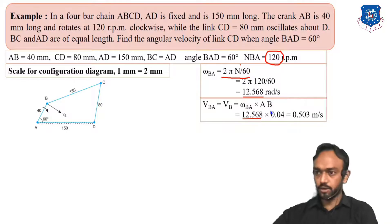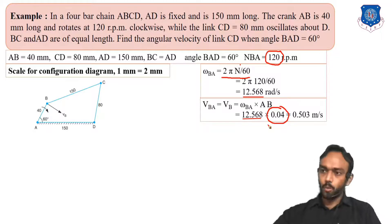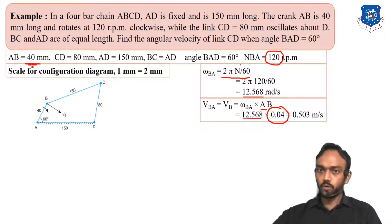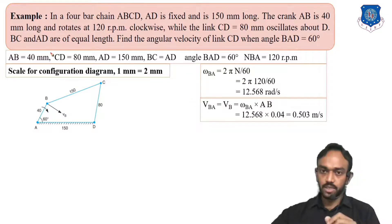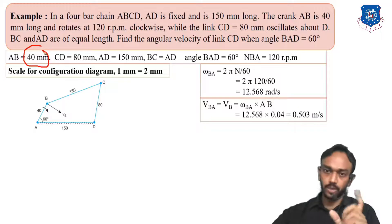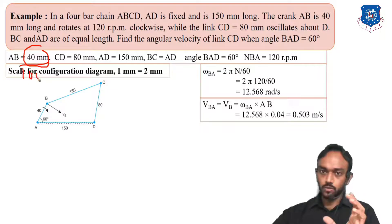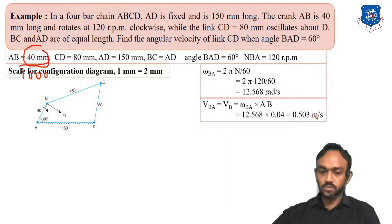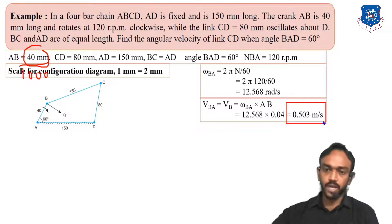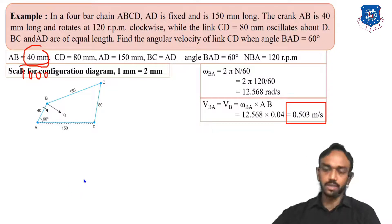Using the RPM you can find the angular velocity: omega equals 2πn/60, where n is 120 RPM, giving 12.56 radians per second. Then the linear velocity equals angular velocity multiplied by the length of AB. The length is 0.04 m (converting 40 mm to meters by dividing by 1000). So linear velocity equals 12.56 multiplied by 0.04, which gives 0.503 meters per second.